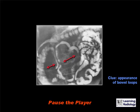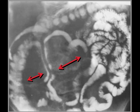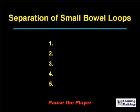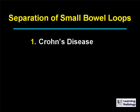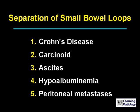The differential is for separation of small bowel loops. There are five causes: Crohn's disease, a carcinoid tumor, ascites, hypoalbuminemia, and peritoneal metastases.